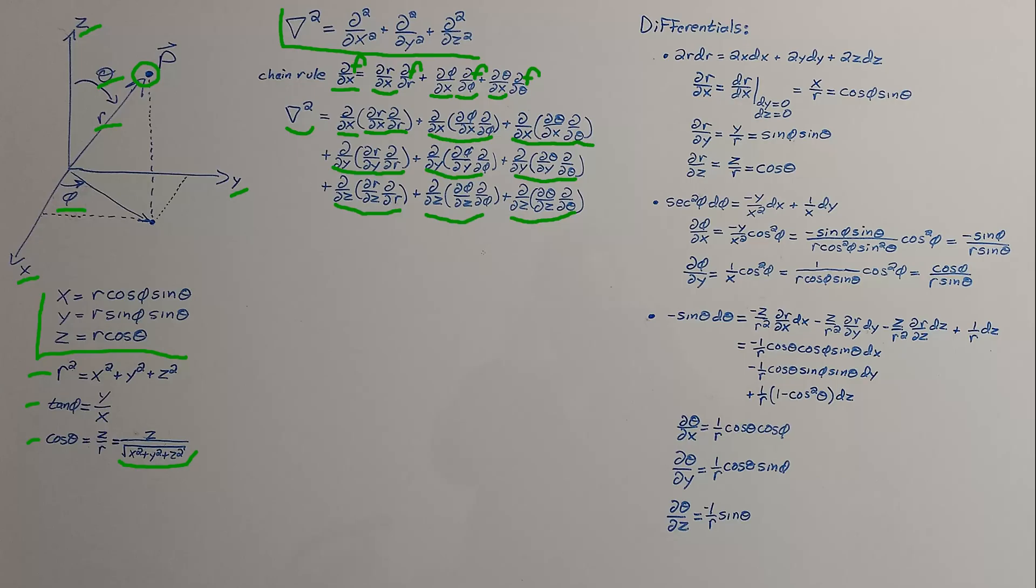These nine terms expanded out and summed up, that's going to be our Laplacian in the new coordinates. Notice for each of these nine terms, we're going to have to apply the product rule because we've got really two functions inside of each of these, and we're going to be using the chain rule again. These first derivative terms are going to reoccur as we expand this out.